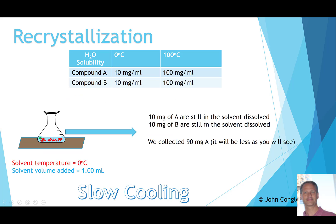In the end, the solution will contain 10 milligrams of A and 10 milligrams of B — because at zero degrees in 1 milliliter, each compound has a solubility of 10 milligrams. Compound B is entirely in solution, which means we've essentially removed all of the impurity. When we collect the solid, in theory we'd get 90 milligrams of pure A, though transfers and losses mean our yield will be slightly less than 90 milligrams — roughly 90% yield.